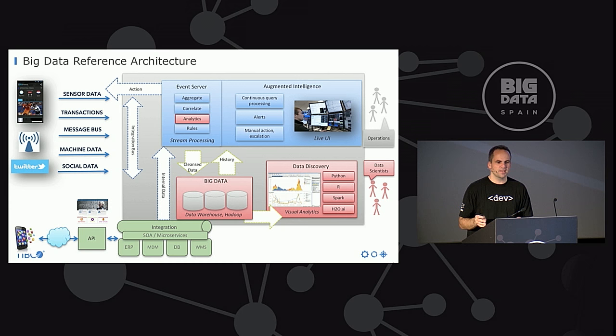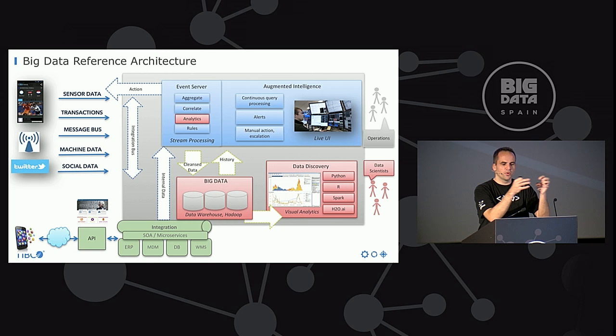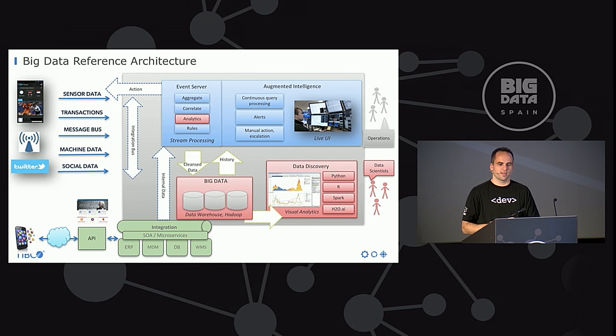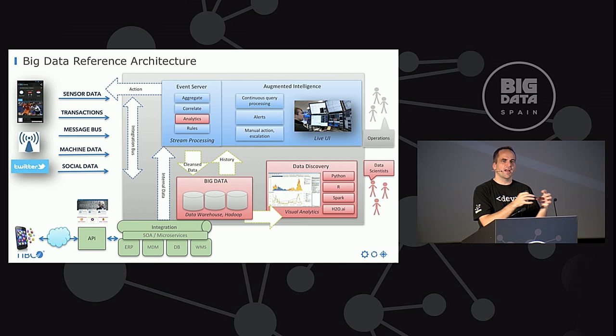From an architecture perspective, I focus in this talk on the event processing or stream processing part — the blue part — where you get inputs like sensors or social media and correlate them in real time to make a decision or recommendation, combined with a live UI for augmented intelligence. The red part is where you actually find the patterns, since before implementing patterns in real time you first have to discover them. That was covered in my other talk, and the slides and video are available on YouTube.